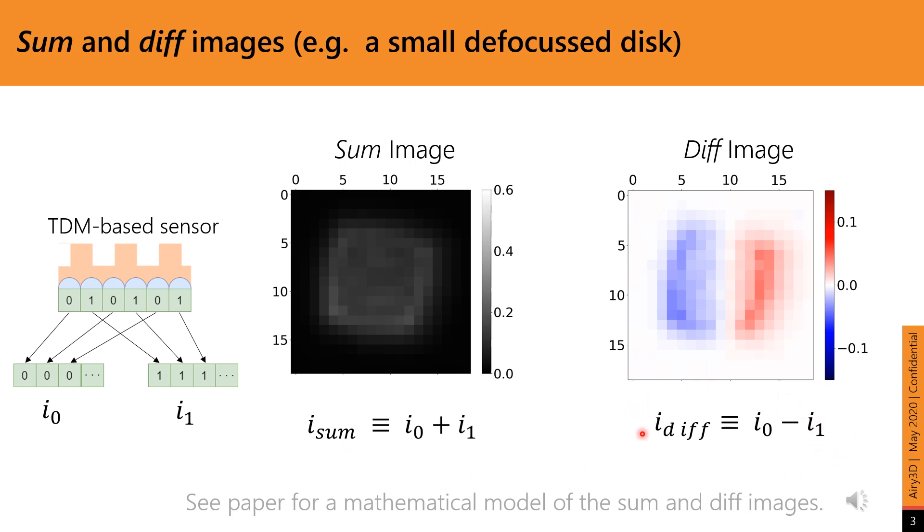The sum response is symmetric, and hence the sum image is very similar to the intensity image from conventional 2D image sensors. The diff response, on the other hand, is asymmetric. The diff is a signed response, and so the positive values are shown in red here, and the negative in blue.